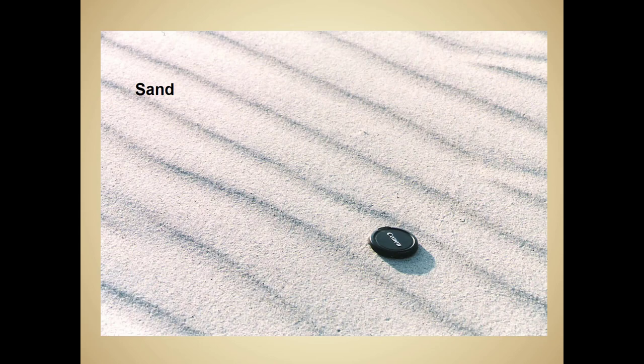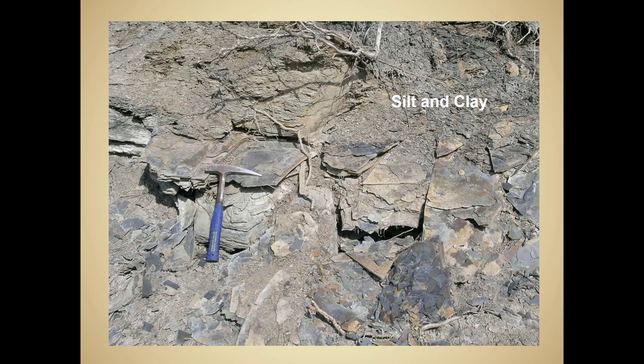Here is sand — you can still see the individual particles, about 2 millimeters in diameter or a little bit smaller. This would probably be classified as a coarse sand because you can see the granular nature of the sand in this photograph. Here is a collective photograph of silt and clay particles. It's very difficult to determine the size difference between the two because they are finer than what the naked eye can see.